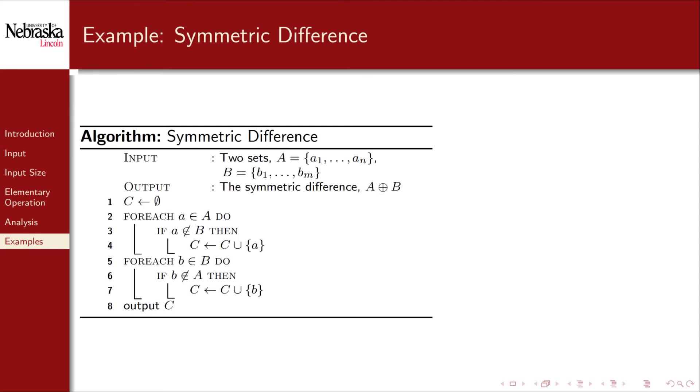Here's another example, computing the symmetric difference of two sets. The symmetric difference is defined as all elements that are in one set, but not in the other, and vice versa. As with the previous example, there are two inputs, but they're both collections. So without loss of generality, we'll assume that a is the larger of the two sets. This allows us to easily state that the input size is the size of a, with n elements. The elementary operation in this algorithm is testing the set membership of an element, performed on lines 3 and 6.